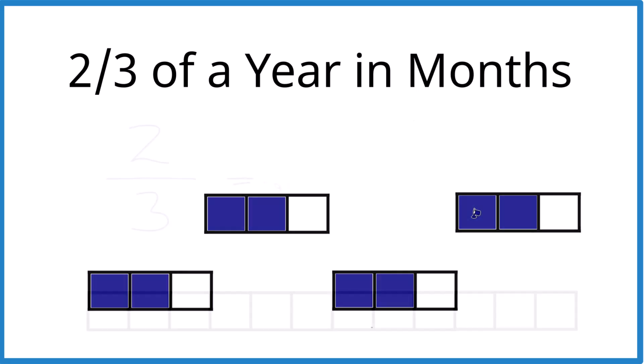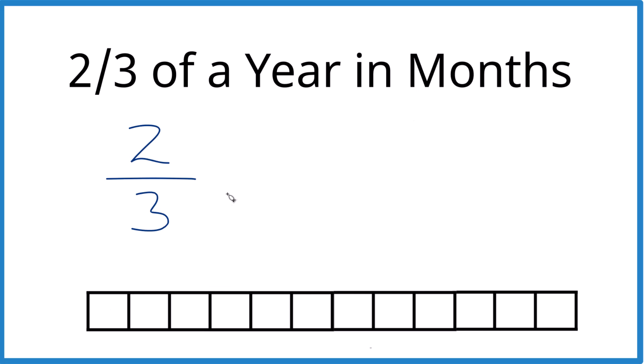Here's another way you could do it. You could say we have our two-thirds, and that's going to equal another fraction with 12 here in the denominator, our 12 months. So three times four is 12. So if we have three times four here, we have to multiply two times four, which would give us eight.